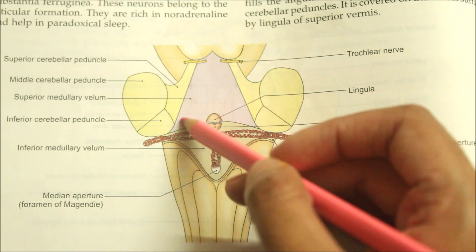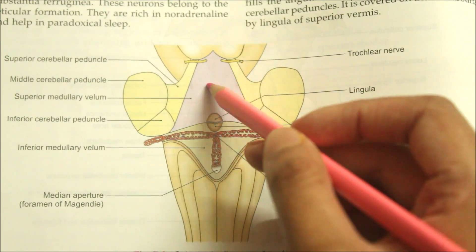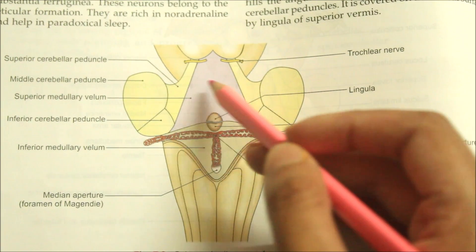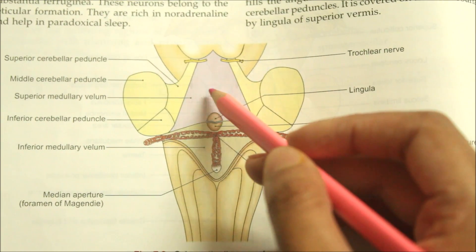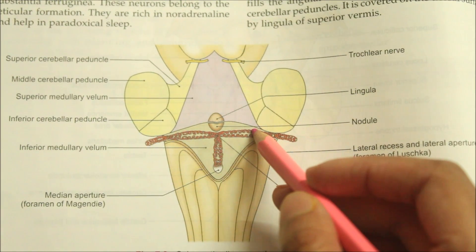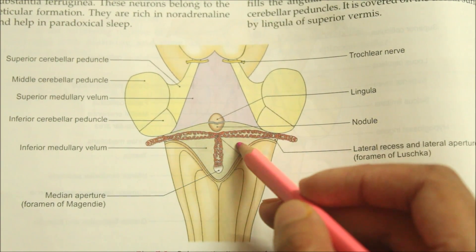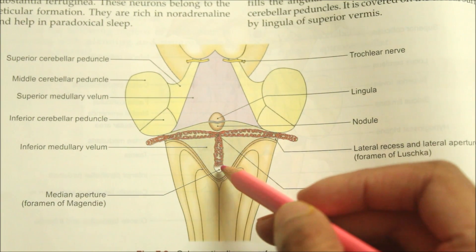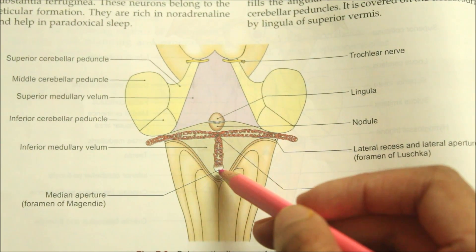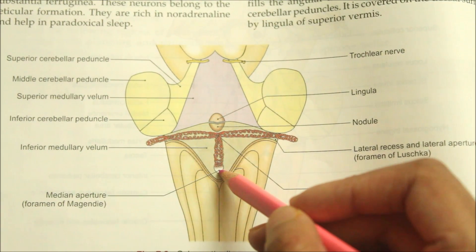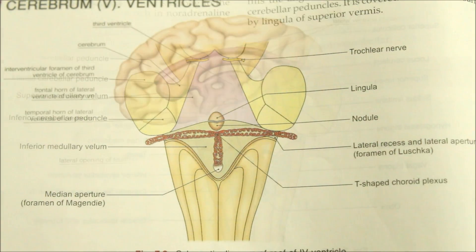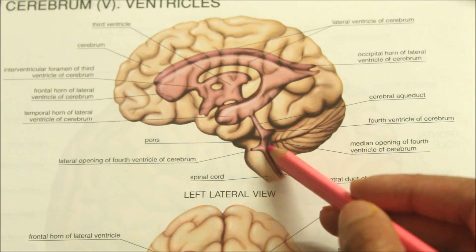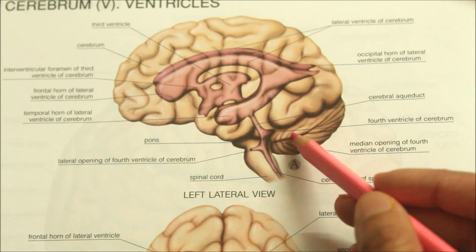The roof of the fourth ventricle is diamond-shaped and can be divided into superior and inferior parts. The superior or cranial part of the roof is formed by the superior cerebellar peduncle and the superior medullary velum. The caudal inferior part consists of an exceedingly thin sheet entirely devoid of nervous tissue. Caudally, the continuity of the sheet is broken by a gap termed the median aperture, through which the cavity of the ventricle communicates freely with the subarachnoid space.